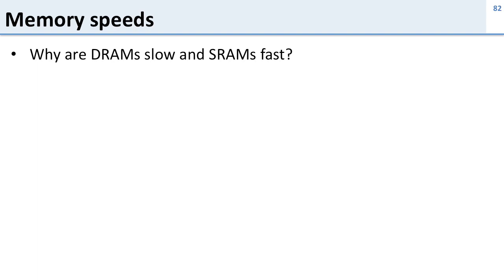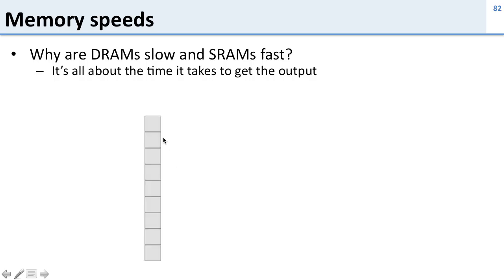Now let's talk about why memories are slow and fast. And this has to do exactly with charging up the wire that I mentioned just a minute ago. So it's all about how fast you can get the output. We saw earlier that when we build memory arrays, we put lots and lots of these cells together. We hook up the cells into one long wire, and that gives us our output.